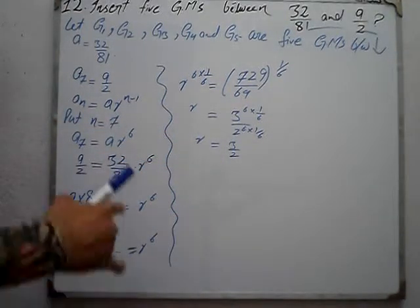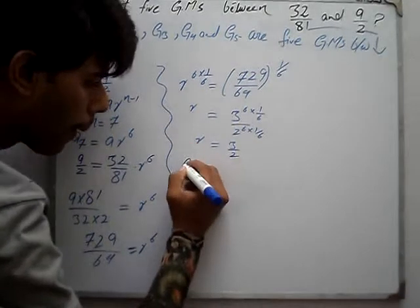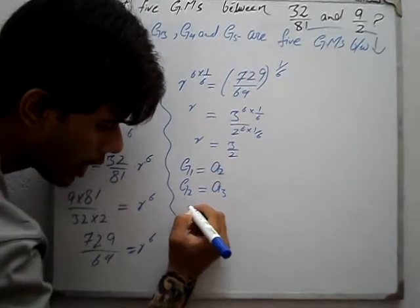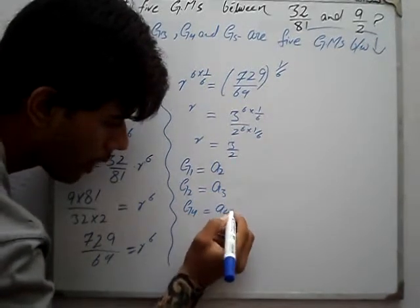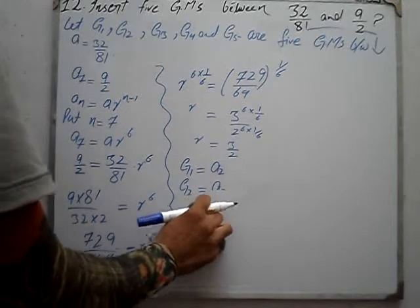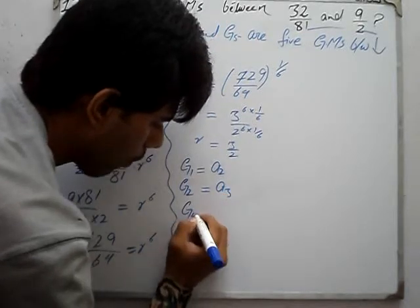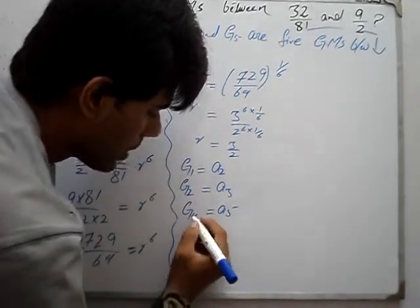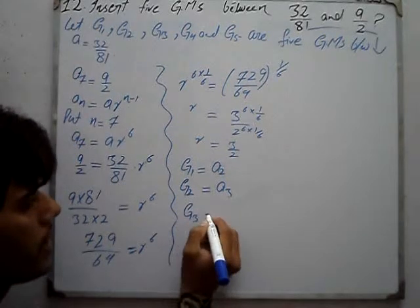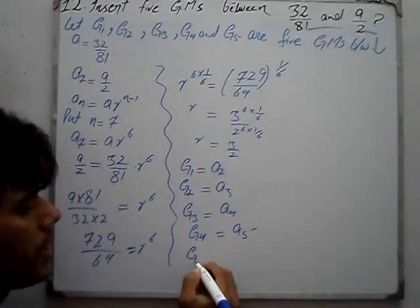Now with R equal to 3 over 2, we find G1, G2, G3, G4, and G5. G1 equals A2, G2 equals A3, G3 equals A4, G4 equals A5, and G5 equals A6.